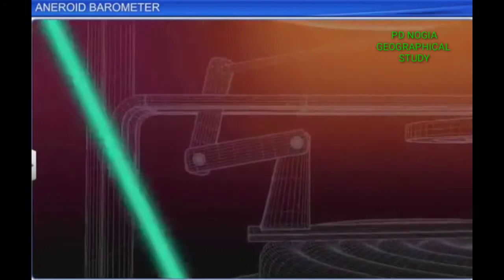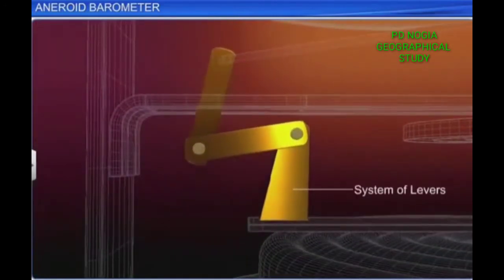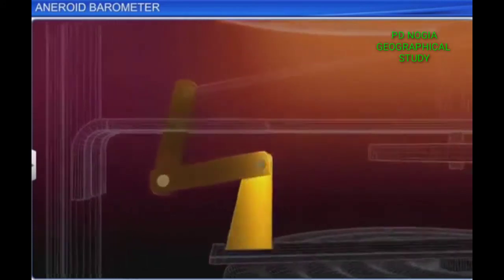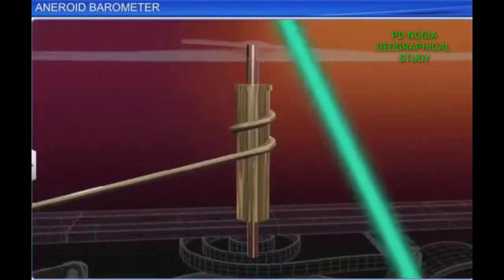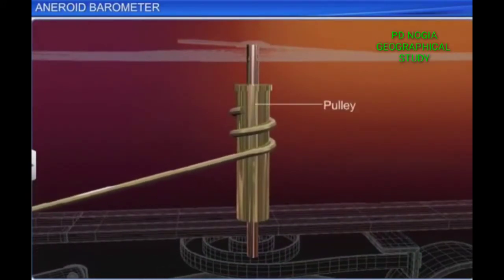The other end of the central lever is connected to the other levers of the system. The system of levers is further connected to a chain that passes over a pulley. A pointer that moves over a calibrated circular scale is attached to the pulley.